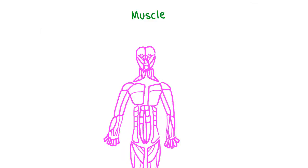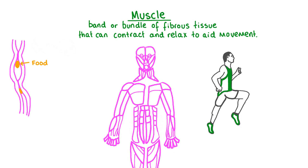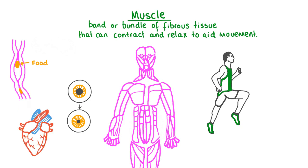Each adult human body contains around 650 muscles making up about half of your total body weight. Muscles are structures in the body that aid movement by contracting and relaxing. They help food move through our digestive system after a meal, allow our legs and arms to move when running a race, and make the pupils in our eyes become smaller when we look into a bright light. Without the ceaseless action of our muscles, even our heart would stop beating.